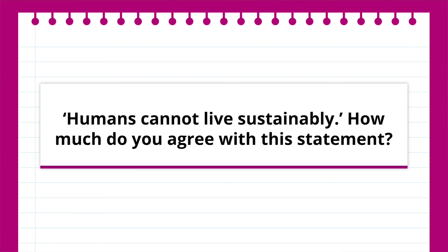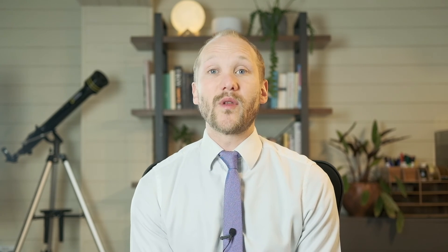The final lesson, lesson six, gives pupils the statement: humans cannot live sustainably. How much do you agree with this statement? Pupils will have the opportunity to draw on their knowledge from the whole unit to reach a judgment about the choices that people make and the chances of more sustainable policies and behaviour becoming more widespread.